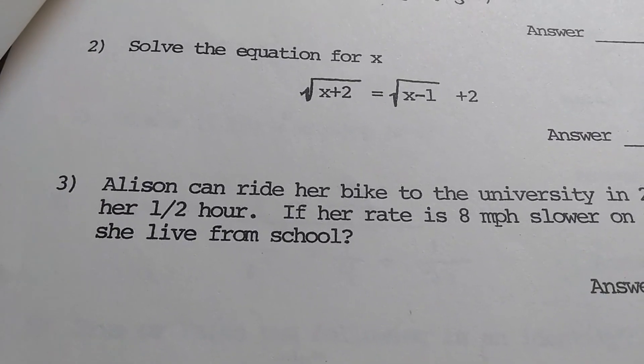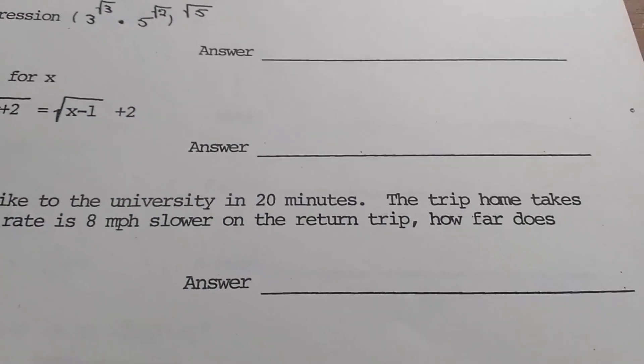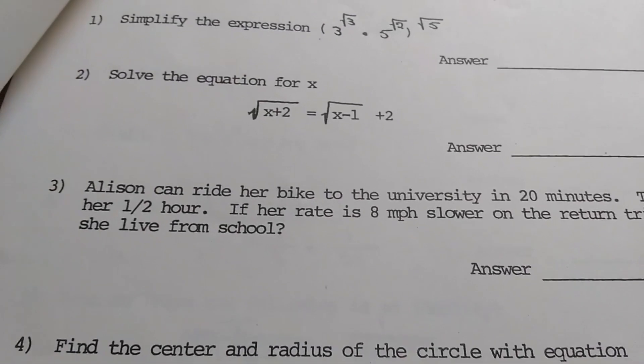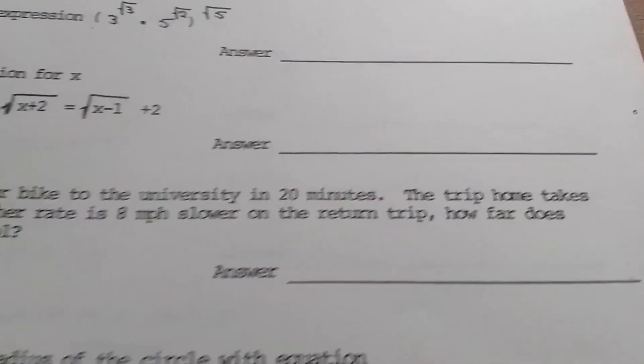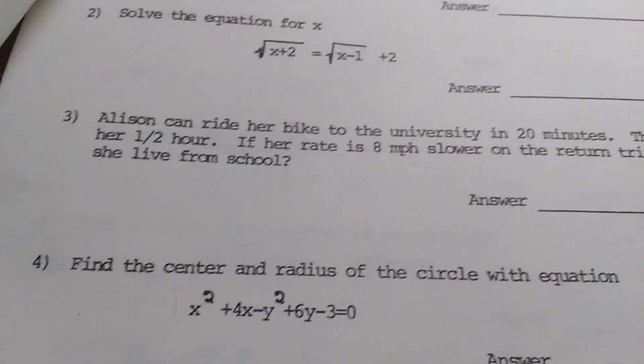What's this say? Let's see. Allison can ride her bike to the university in 20 minutes. The trip home takes her half an hour. If her rate is 8 mph slower on the return trip, how far does she live from school? I don't know why. I think that's funny.